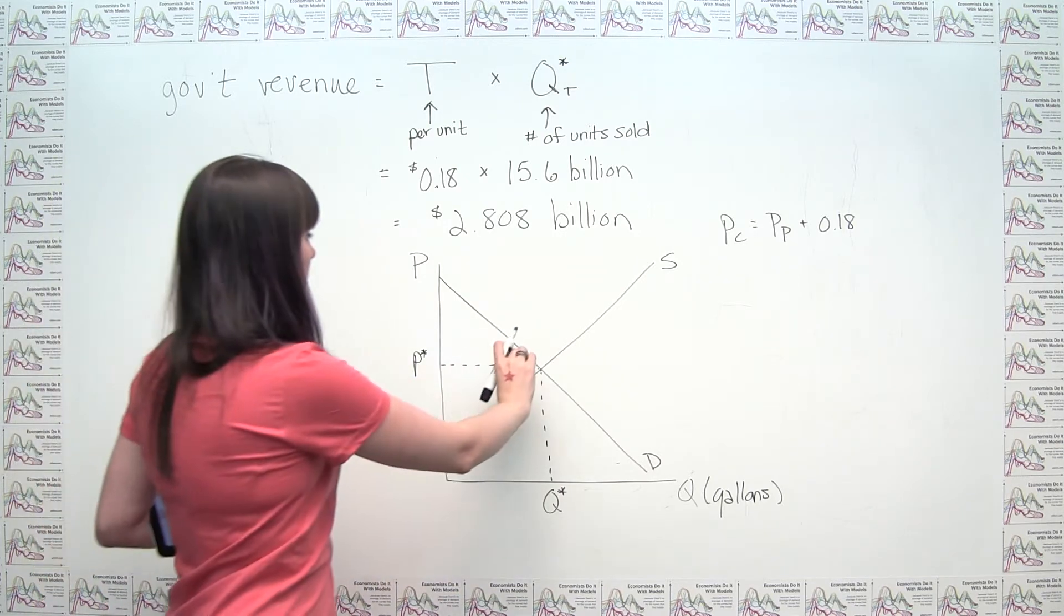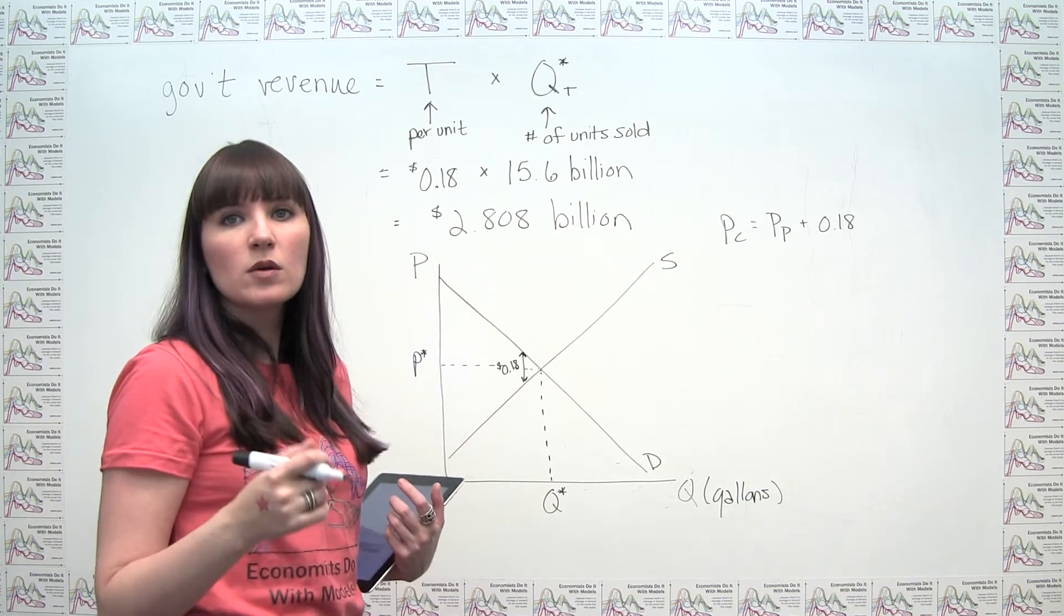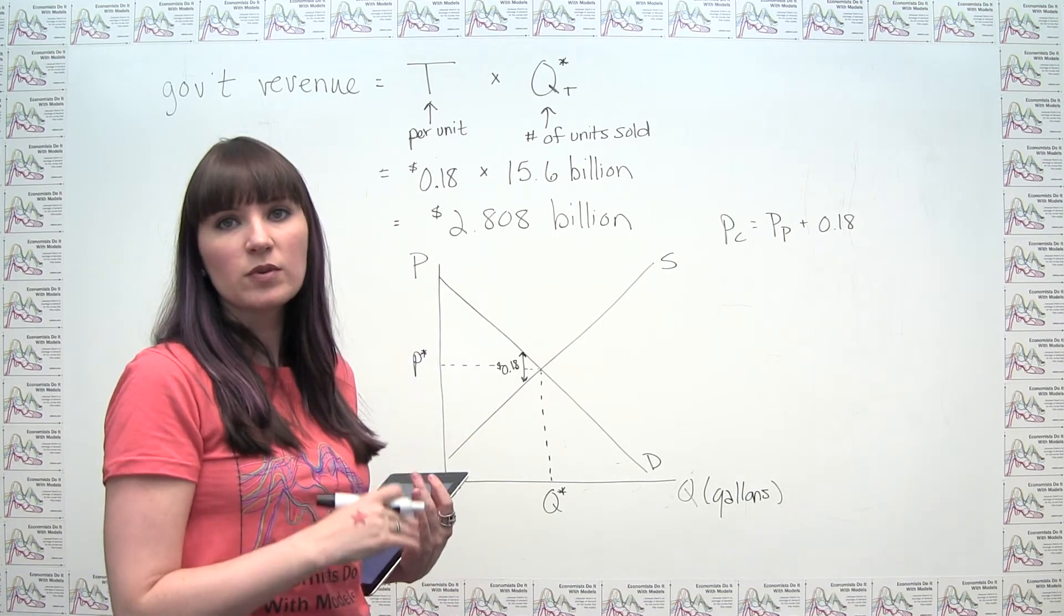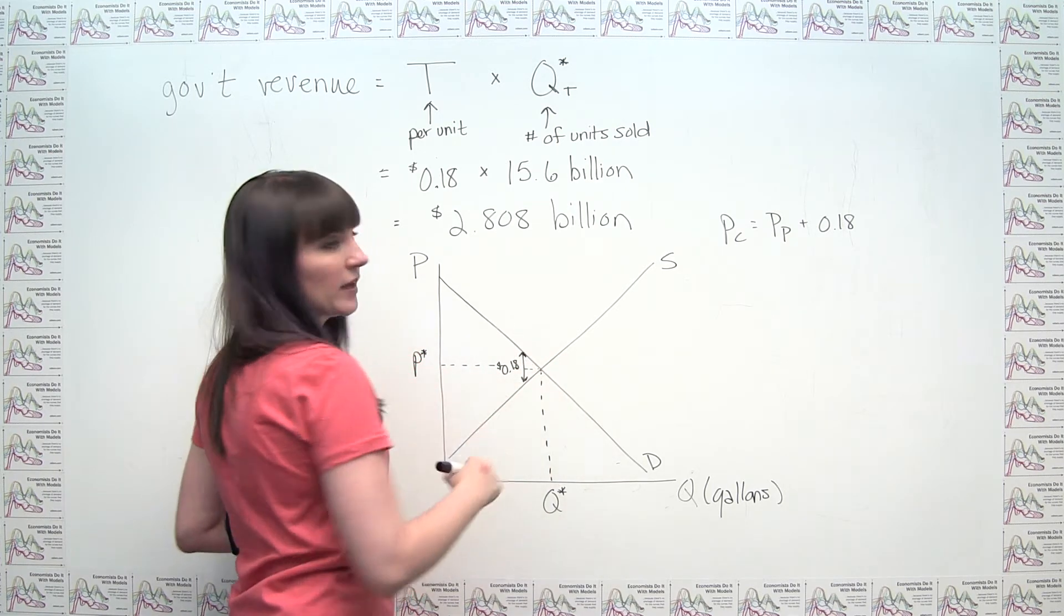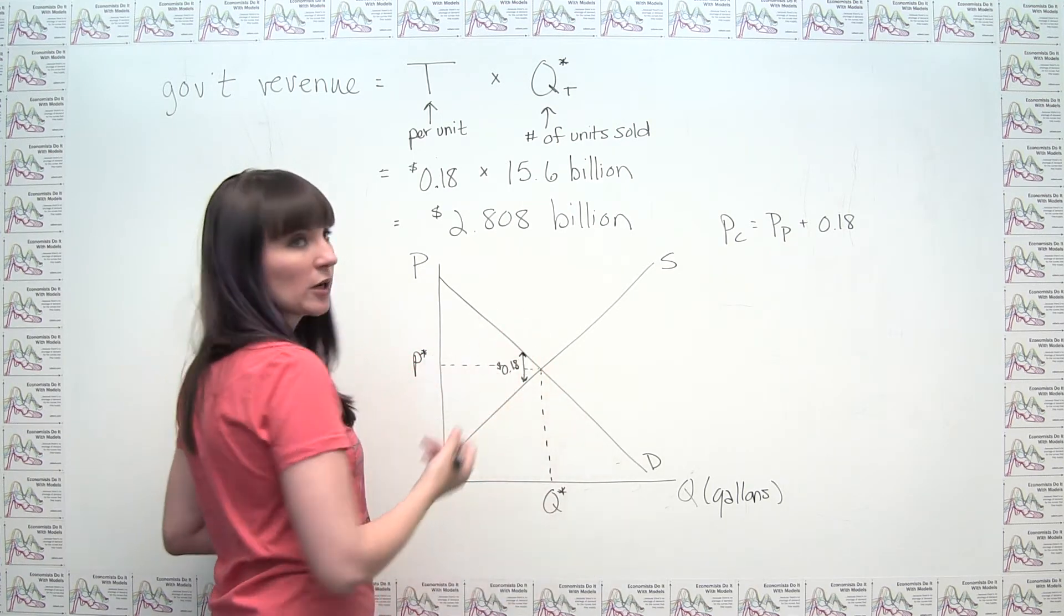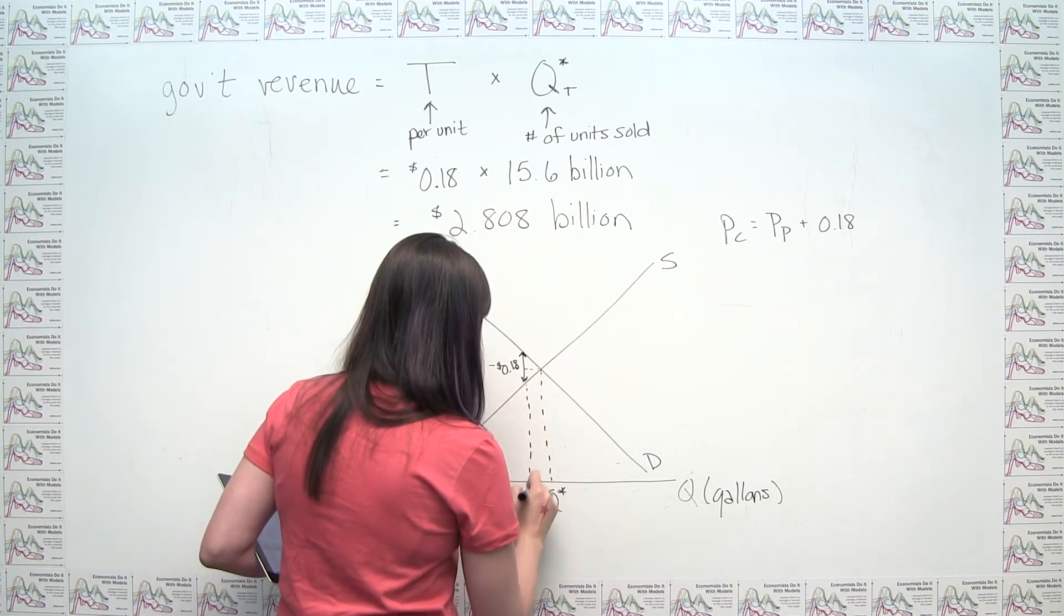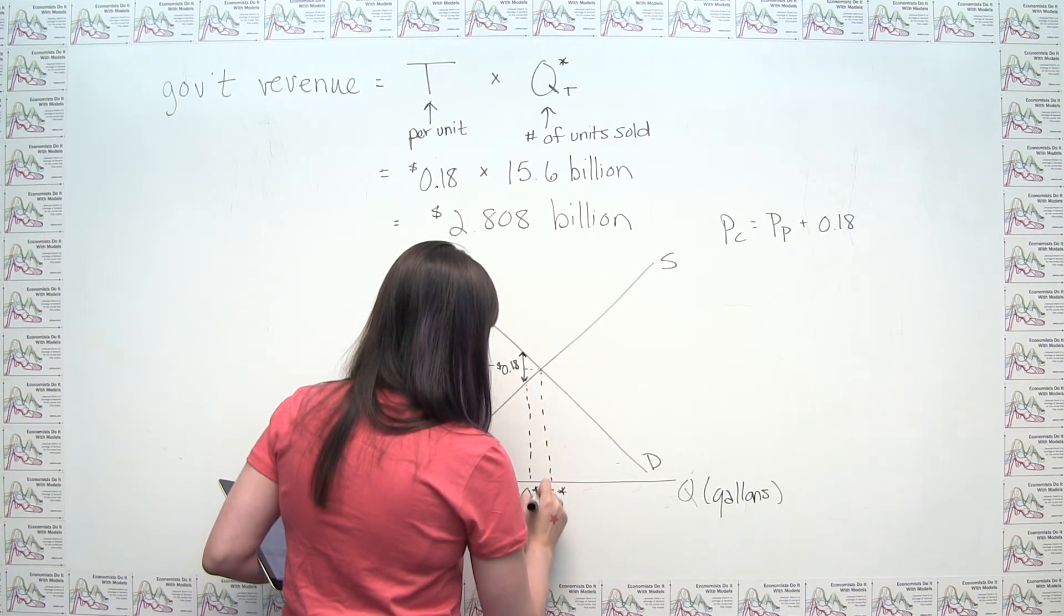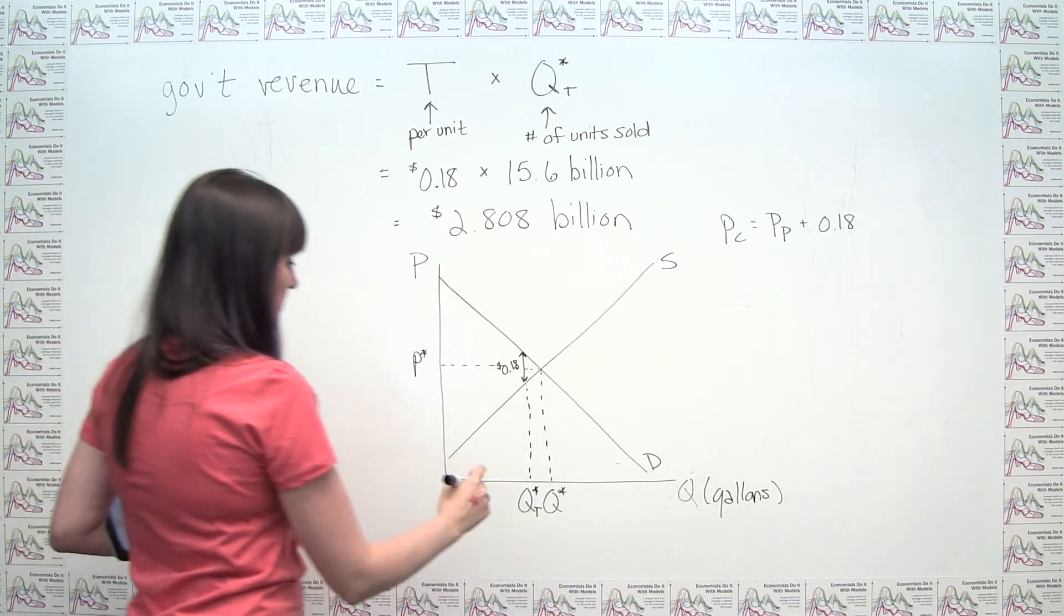And we can say, well, this is the quantity that corresponds to producers and consumers either supplying or demanding the same amount when their prices differ by $0.18 and the consumer's price is bigger. And we would say that this is our equilibrium quantity with our tax, which is what we said was 15.6 billion here.